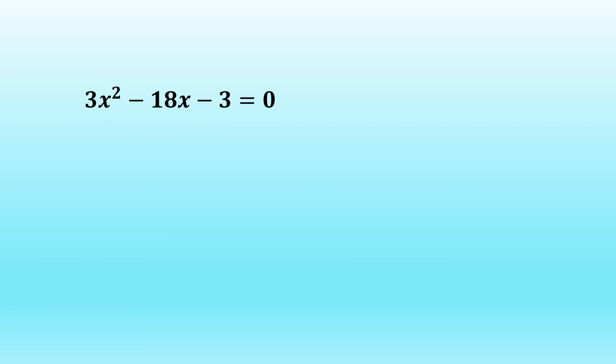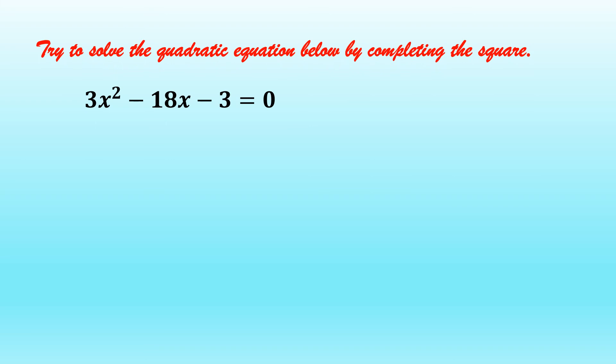Try to solve 3x squared minus 18x minus 3 equal to 0 by completing the square. You can use algebra tiles or you can just follow the steps used in example number 1 and example number 2. I will give you time, and later on after a few minutes I will show you the answer to this item.